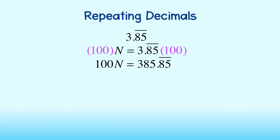Now, let's subtract 1N from both sides of the equation. 100N minus N is equal to 99N. Take a look at the right side of the equation now. Remember when we made 3.85 repeating equal to N? Well, since N is also equal to 3.85 repeating, we can subtract that number from the right-hand side.